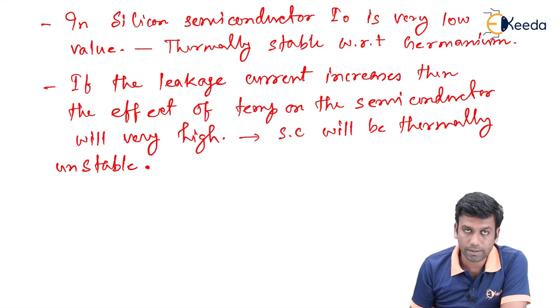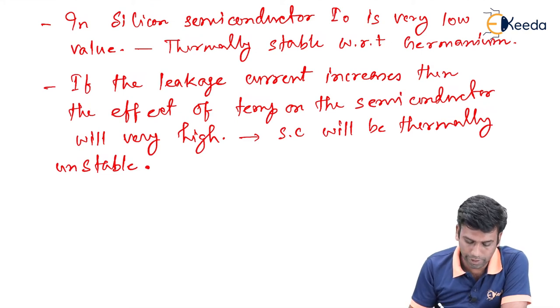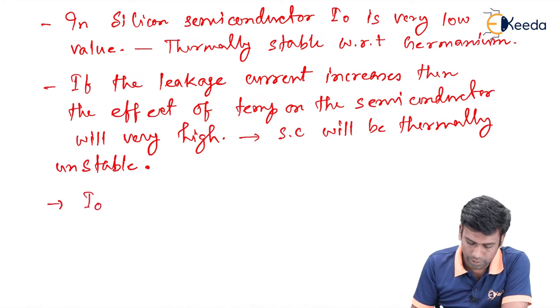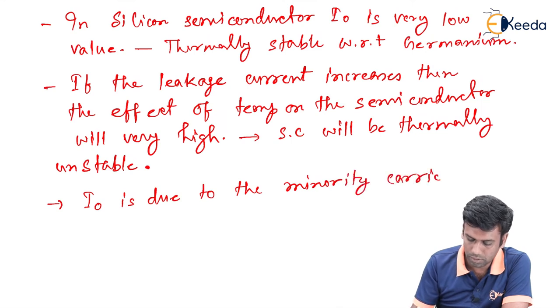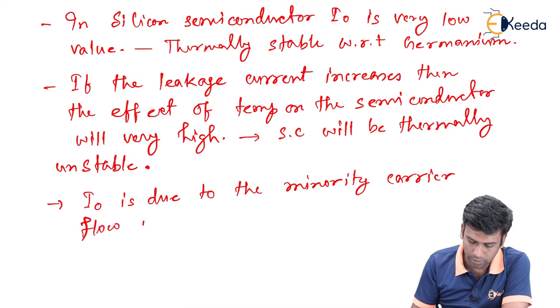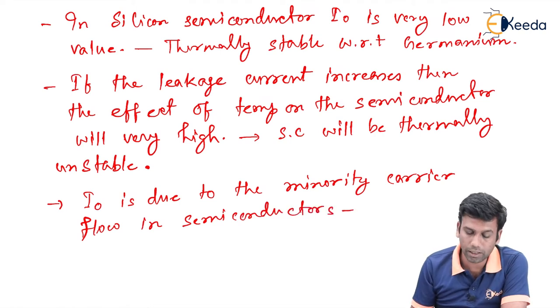Now let us see how this leakage current I0 varies with the temperature. Before that, we have already discussed that this leakage current I0 is due to the minority carrier flow in semiconductors. That's why this leakage current is also called as minority carrier current.